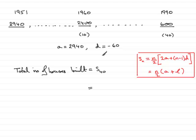Because I know the first term, 2,940, and the last term l being 600. So it would save me quite a lot of work. But you could try this formula and you should arrive at the same answer.